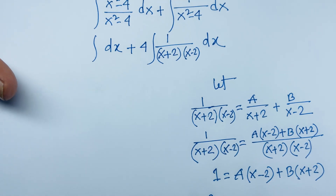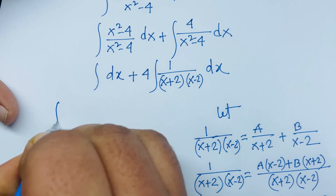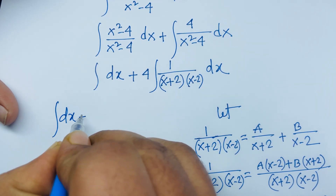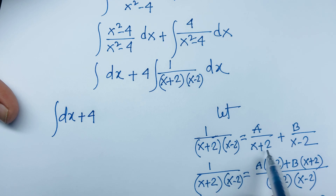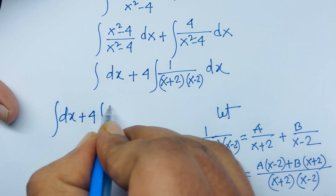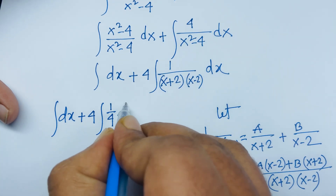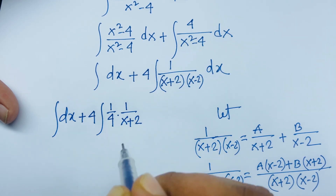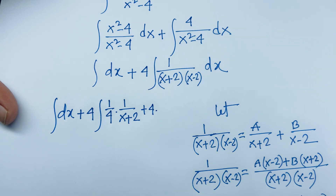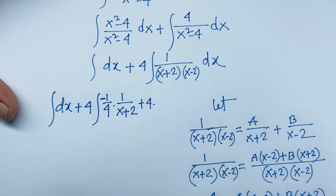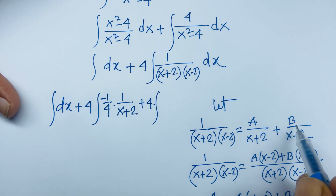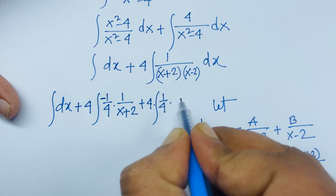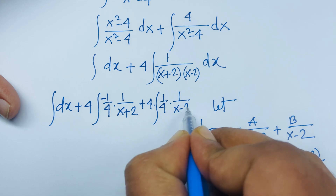Substituting back, we have the integral of dx plus 4 times [(-1/4)·(1/(x+2)) + (1/4)·(1/(x-2))] dx. The 4 and 1/4 factors cancel in each term, giving us the integral of dx minus the integral of 1/(x+2) dx plus the integral of 1/(x-2) dx.